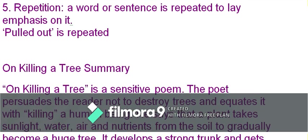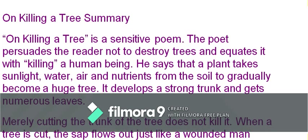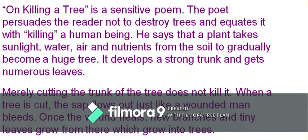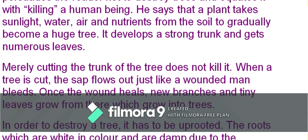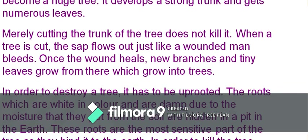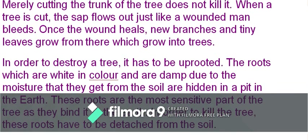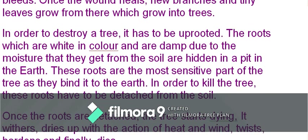'On Killing a Tree' is a sensitive poem in which the poet persuades the reader not to destroy trees, equating it with killing a human being. A tree takes sunlight, water, air, and nutrients from the soil to gradually become a huge tree with a strong trunk and numerous leaves. Merely cutting the trunk does not kill it — sap flows out like blood from a wound, and once healed, new branches and tiny leaves grow back.